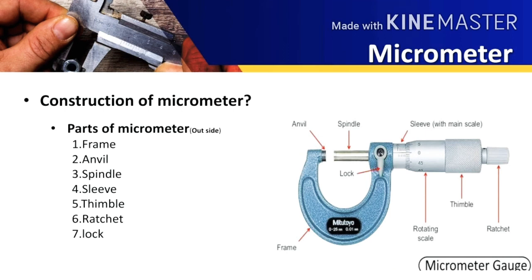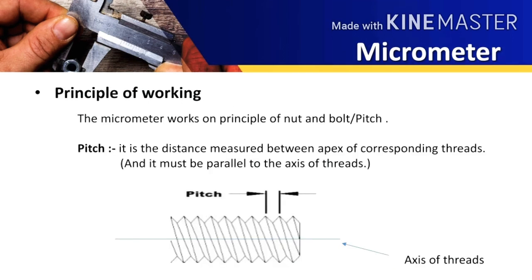Now let us see the principle of working of the micrometer. The micrometer works on the principle of nut and bolt or pitch. So let us see what is the pitch. The pitch is the distance measured between the apex of the corresponding threads and it must be parallel to the axis of the thread.